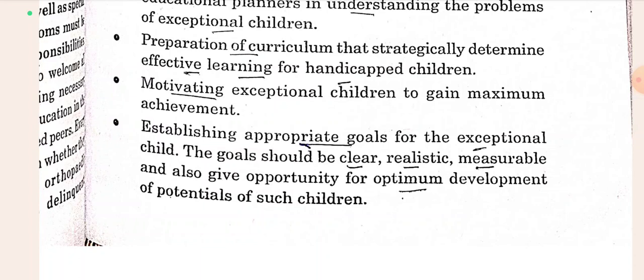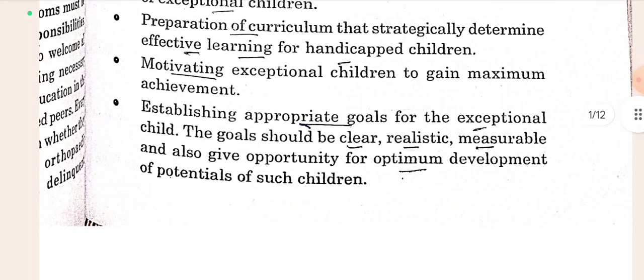Establishing appropriate goals for the exceptional child. Sabhi exceptional child ke liye appropriate goals establish karna. The goal should be clear, realistic, measurable, and also give opportunity for optimum development of potential of such children. Goal aisa hona chahiye ki woh clear ho, realistic ho — means woh possible ho sake — measurable ho, usse measure kiya ja sake, aur jisse ki sabhi ko opportunity dhi ja sake optimum development ke liye apni potential ko.